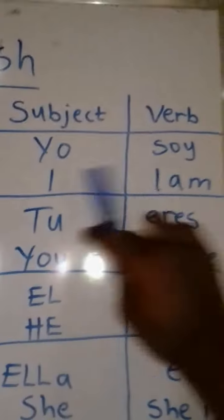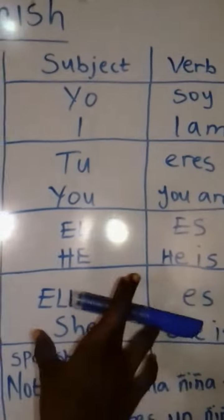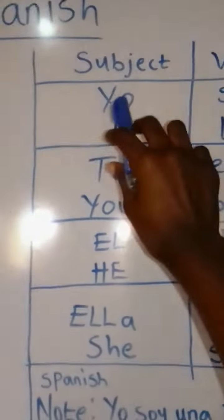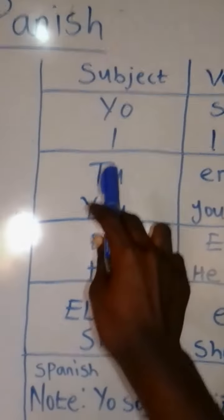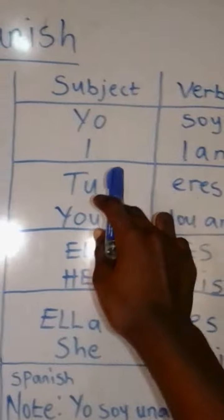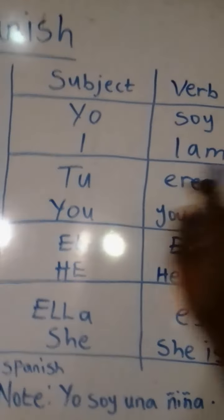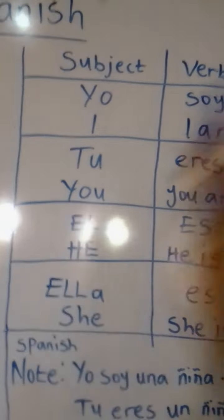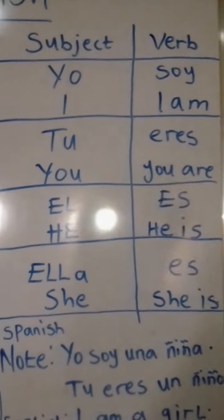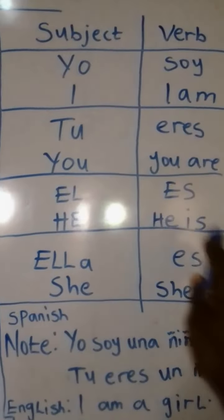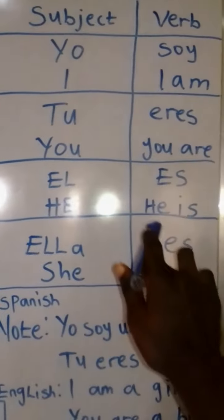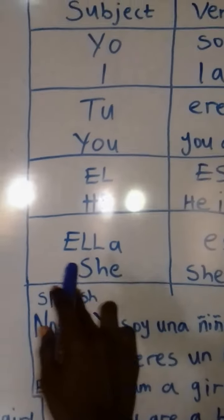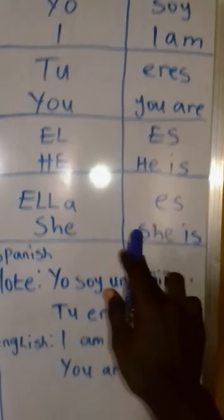So I want us to look at subjects and verbs. In English we have something like this, and so do we in Spanish. In number one, the subject is yo, which means I. Soy is the verb, meaning I am. Tú means you, eres means you are. Él means he, es means he is. Es also means she is.